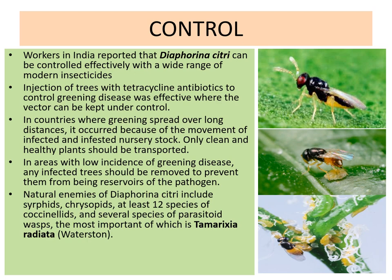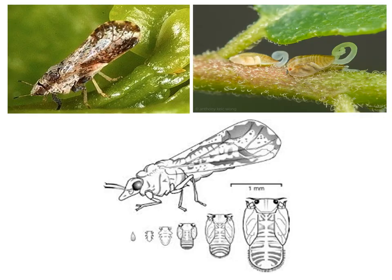Natural enemies of Diapherina citri include syrphids, chrysopids, at least 12 species of coccinellids, and several species of parasitoid wasps — the most important being Tamarixia radiata. Here you can see the adult, the nymphs with the waxy secretion, and all stages of the nymphal instars.